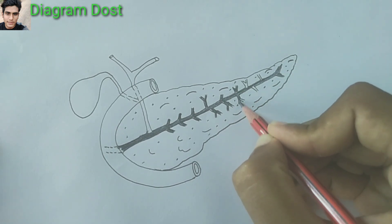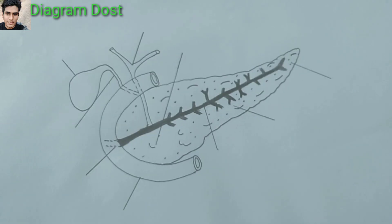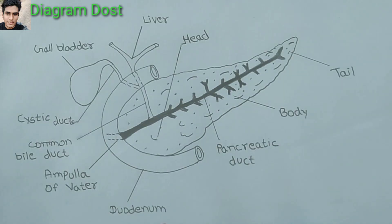The diagram is almost completed and is ready for labeling. Now we will label it: gall bladder, liver, head, body, tail, pancreatic duct, duodenum. I have labeled everything.